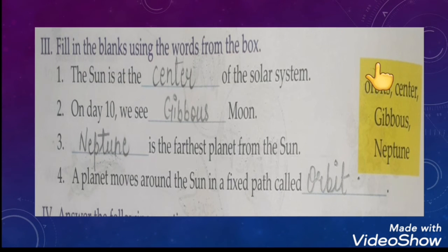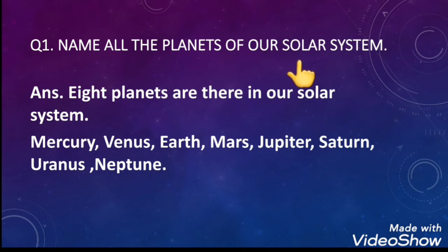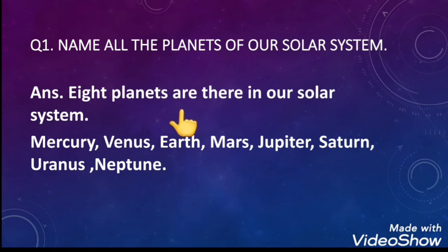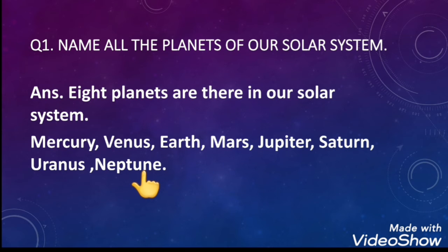Now we will move to the question answers. The first question is: name all the planets of our solar system. There are eight planets. The names of the planets are Mercury, Venus, Earth, Mars, Jupiter, Saturn, Uranus, and Neptune.